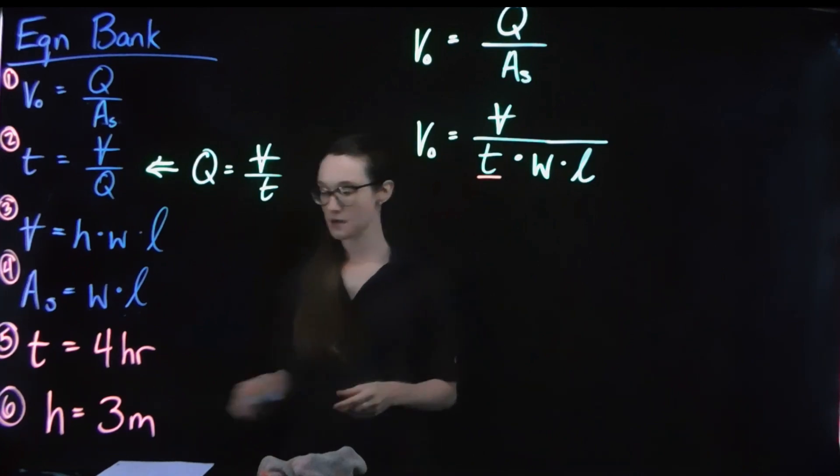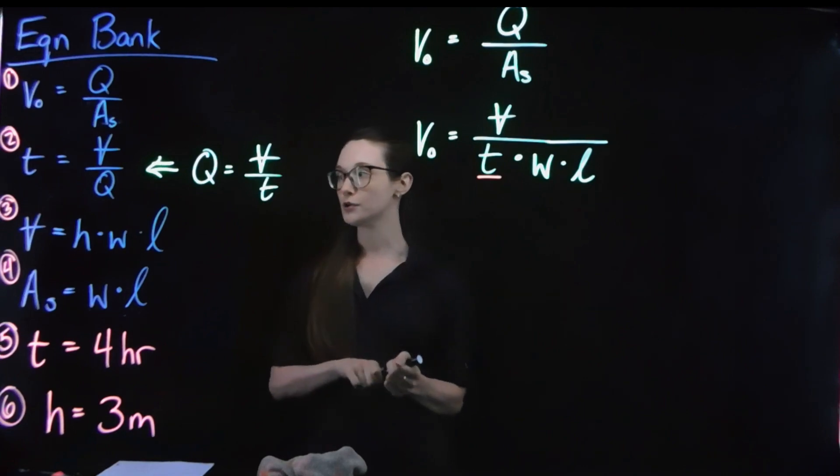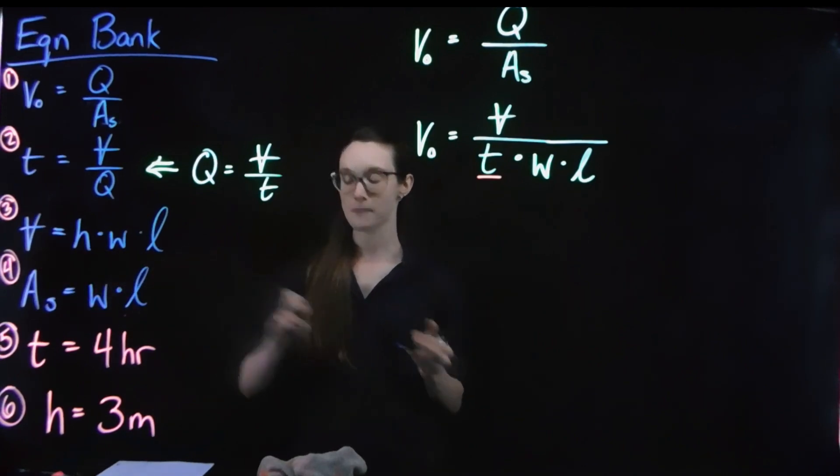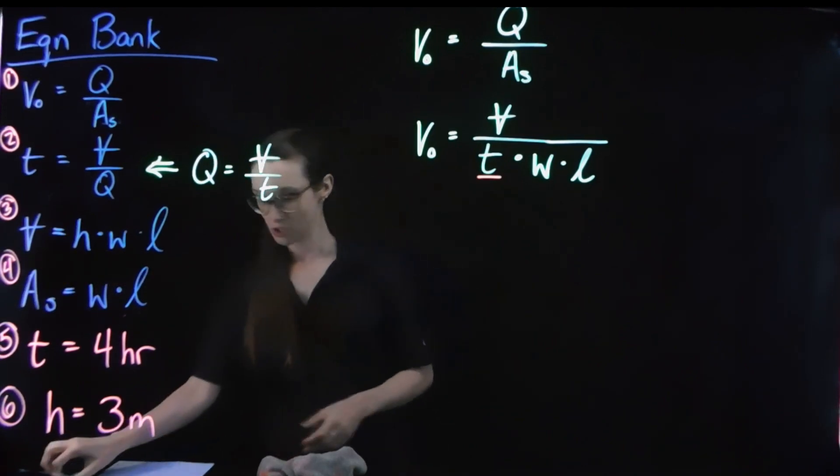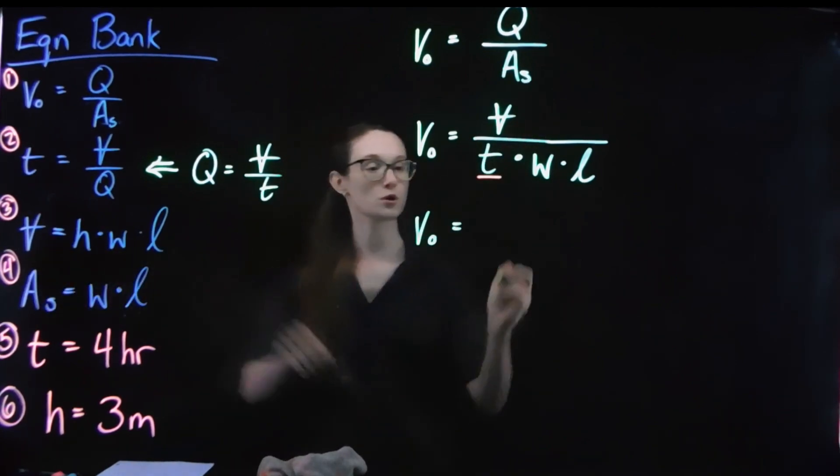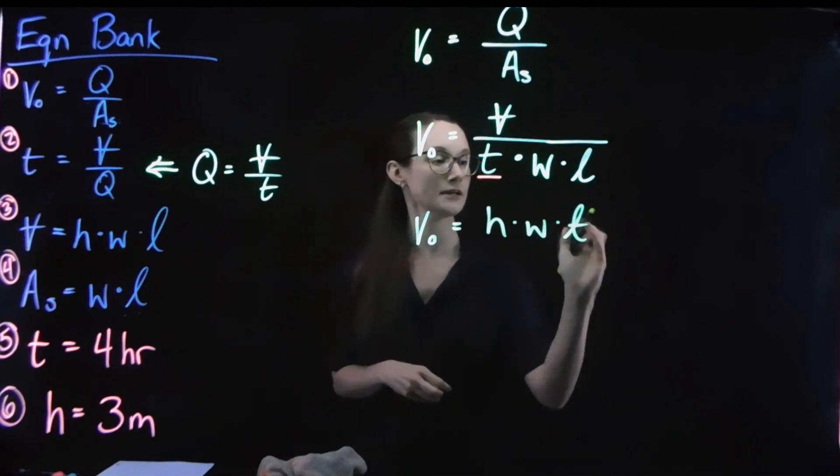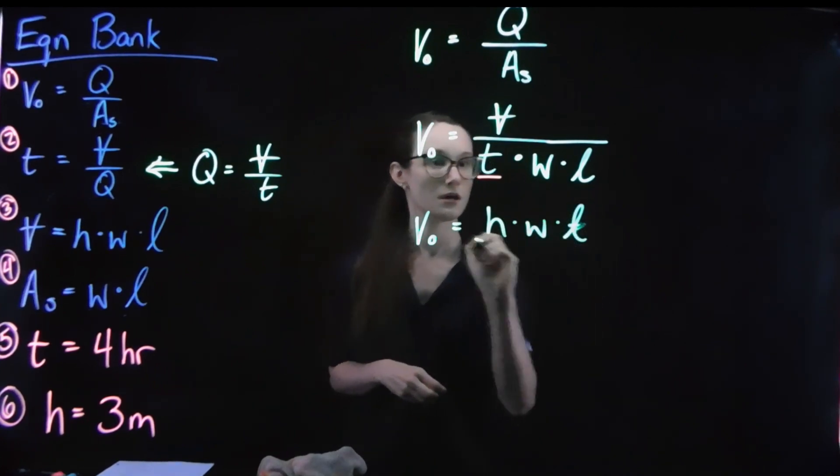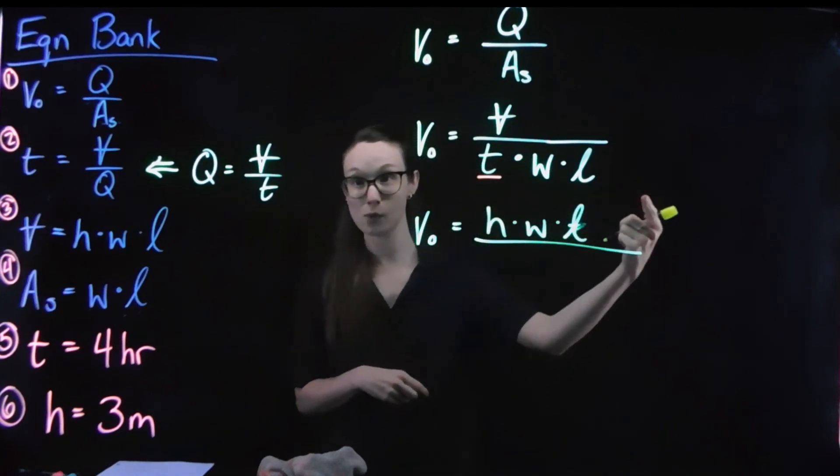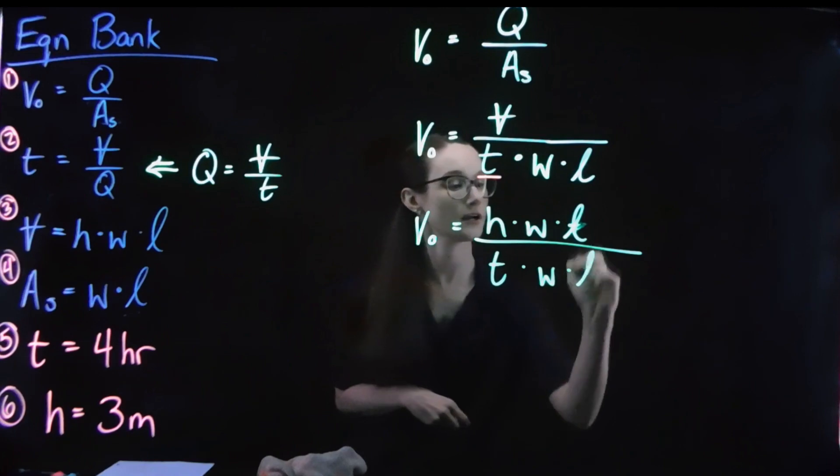Now, this is where a little bit more experience comes in. I can look at this and go, hey, volume, that is my equation three. So I'm going to substitute that in. Volume from equation three is my height times my width times my length. And divide that by what was already in my denominator. The time that I know, the width that I know, the length.